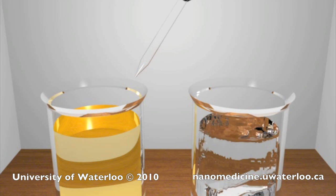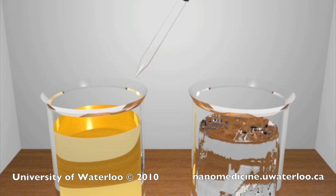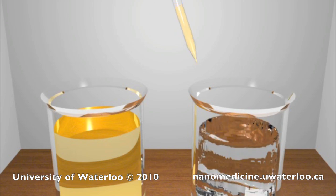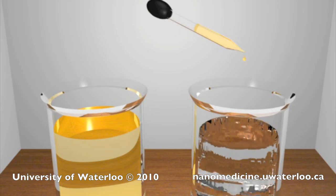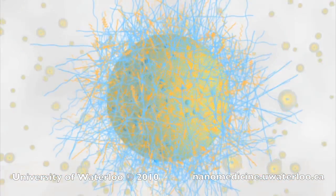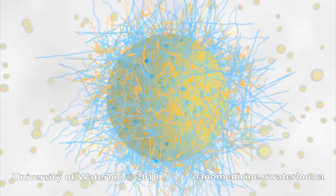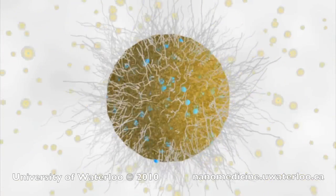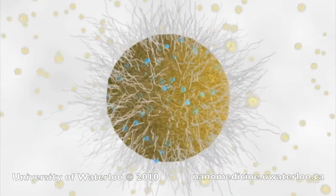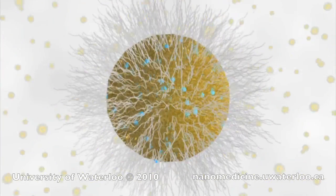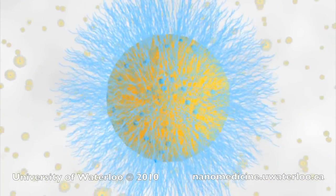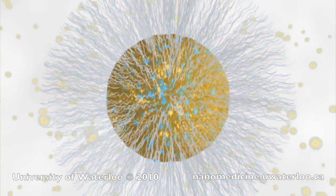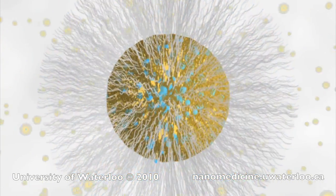Nanoparticle formation is accomplished via the dropwise addition of the organic solution to rapidly stirred water. The initially disordered copolymers rapidly self-assemble at the organic-water interface of the nanodroplets, reorienting themselves so that the hydrophobic blocks are surrounded and stabilized by the hydrophilic blocks.